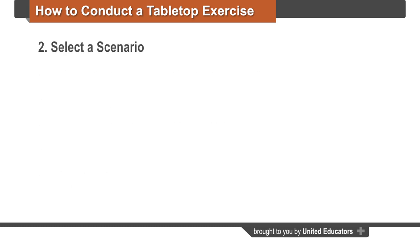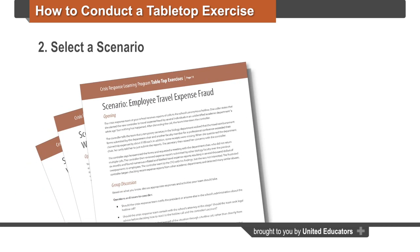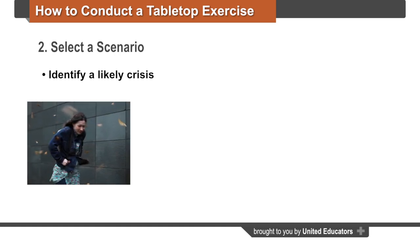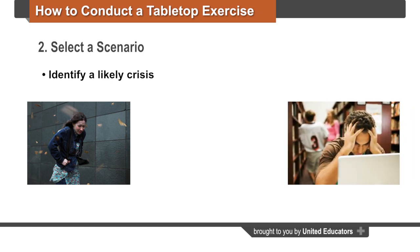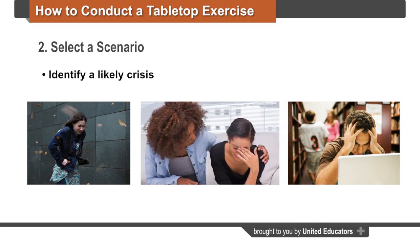The next step is selecting a scenario. An effective tabletop scenario should be realistic, engaging to participants, and aligned to meet the predetermined objectives. When identifying a likely crisis, consider factors such as risks specific to your geographical area — such as a severe weather event that could shut down power to research labs — mission-specific risks such as a sudden loss of IT infrastructure during finals week, and issues that could generate negative publicity such as allegations of sexual misconduct by an employee.